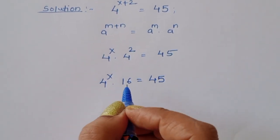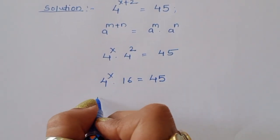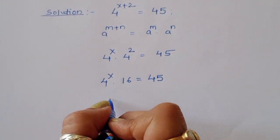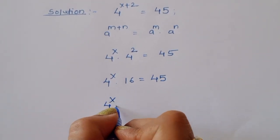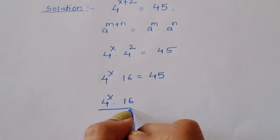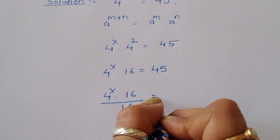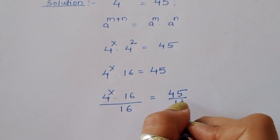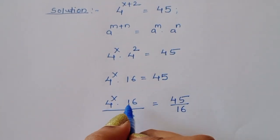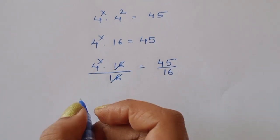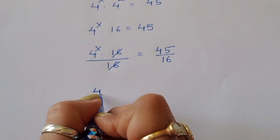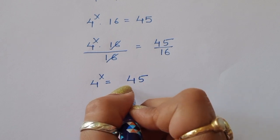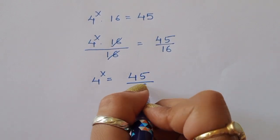Now, divide both sides by 16. If we divide both sides by 16, we get 4 power x times 16 divided by 16 is equal to 45 divided by 16. The 16s cancel, so 4 power x is equal to 45 divided by 16.